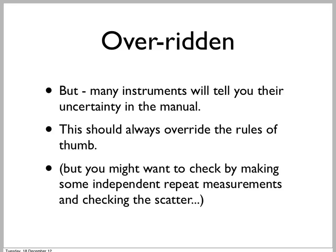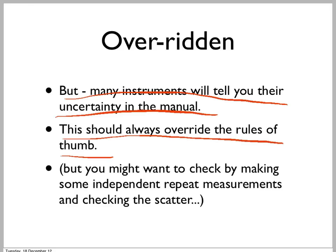Exception to that. Many instruments, like digital multimeters, will actually tell you the uncertainty in the manual. For example, you might say that a given multimeter is good to 0.13 volts, or whatever it might be. If it tells you that, that always should override the rules of thumb. The rules of thumb are only good if you don't have any better estimate of what's really going on.